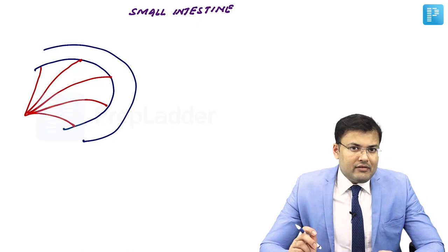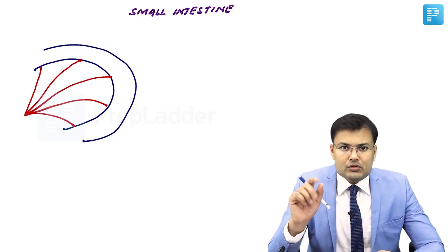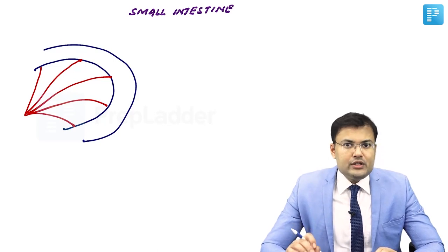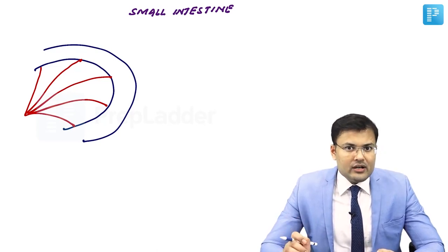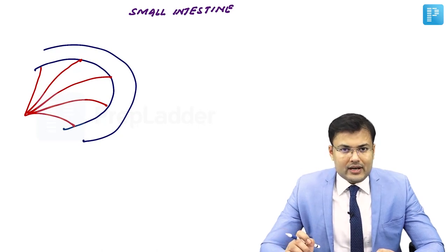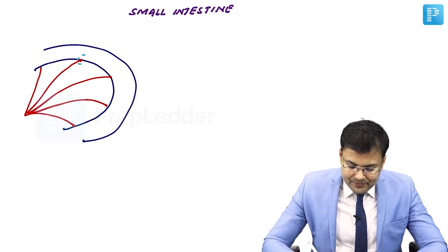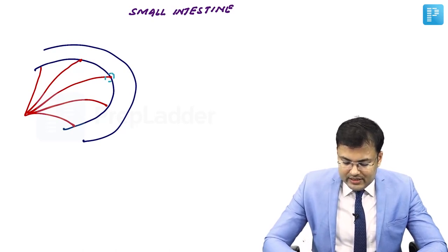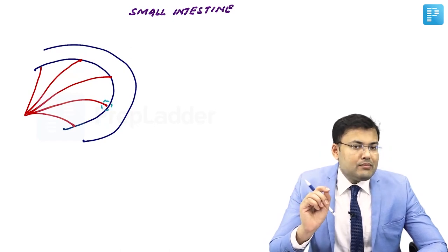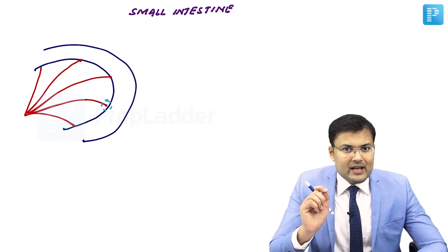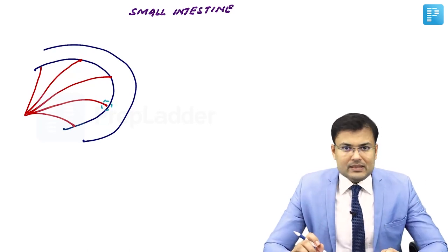In bones you have read that there is one artery which penetrates the bone to supply it, known as the nutrient artery. So nutrient arteries penetrate the organ to supply it. Here in the mesentery, these are the nutrient arteries, and they are going to penetrate the muscularis propria and then supply the submucosa, because lymphovascular supply is present in the submucosa.